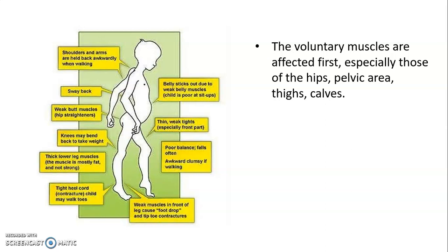The voluntary muscles are affected first, especially those of the hip, pelvic area, thigh, and calves. Typical features of DMD include: shoulders and arms held back awkwardly when walking; belly sticking out due to weak abdominal muscles; poor sit-ups; sway back; weak gluteal muscles; thin weak thighs; knees bending back to take weight; poor balance; frequent falls; and heel cord (Achilles tendon) contracture causing the child to walk on toes. Foot drop and tip-toe contractures also occur.